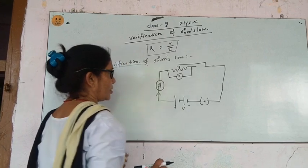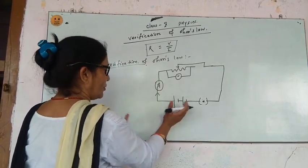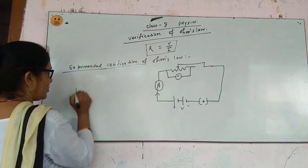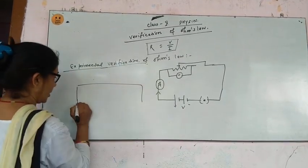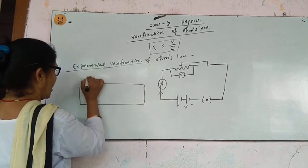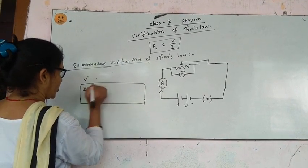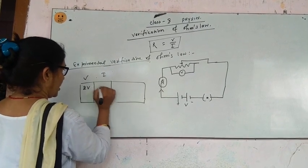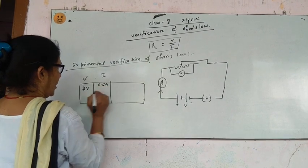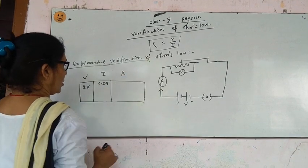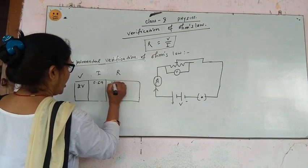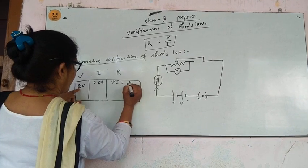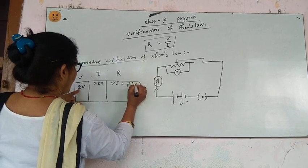The battery is connected. We can change the value of potential difference from the source. Suppose you take 2 volts — that is, V = 2 volt. It gives the value of current as 0.5 ampere. Then you can find the value of resistance by V divided by I, that is 2 divided by 0.5, which equals 4 ohm.